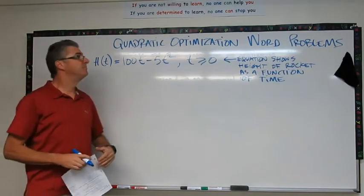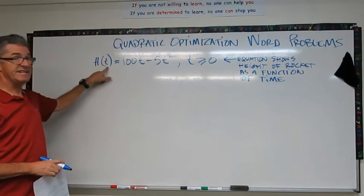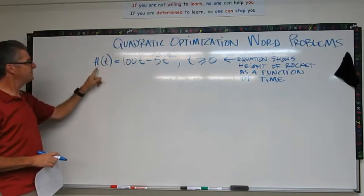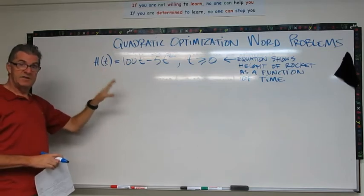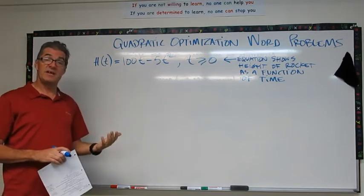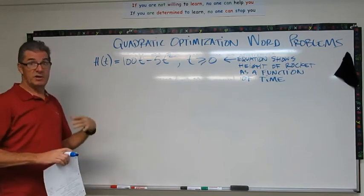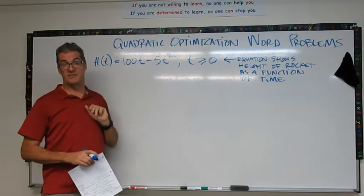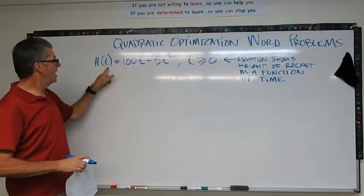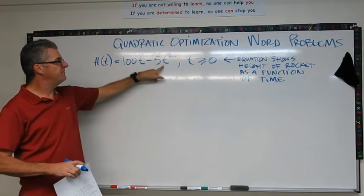Okay, let's do a problem. Here's my function, h of t. So what that means is height as a function of time. This kind of a function comes up really commonly in physics. So if you're taking a physics class right now or you're going to take a class of physics in the future, you're going to be all over these kinds of equations. So height as a function of time. Here's my function, 100t minus 5t squared.